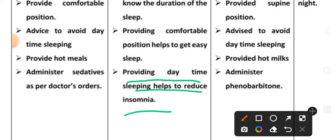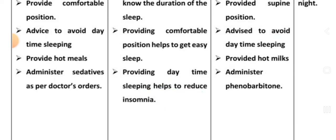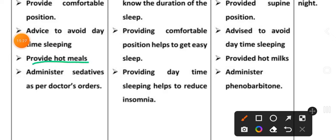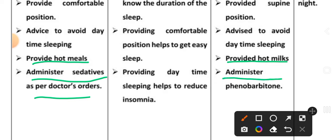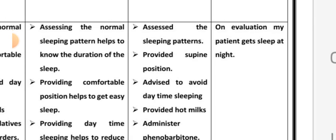Implementation: provided hot milk to the child to promote sleep. Fourth intervention: administer sedatives as per the doctor's prescription. Implementation: administered phenobarbital as per the doctor's prescription.